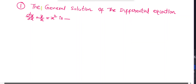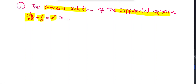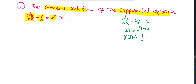This is the first question. The general solution of the differential equation dy/dx + y/x = x². This is a linear differential equation of the form dy/dx + P·y = Q. First we find the integrating factor: e^(∫P dx). The general solution is y·(integrating factor) = ∫(integrating factor)·Q dx.